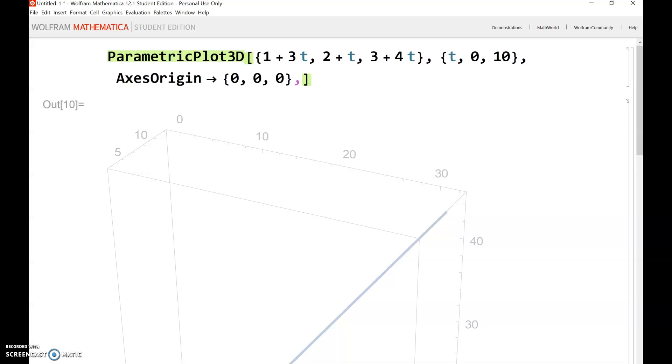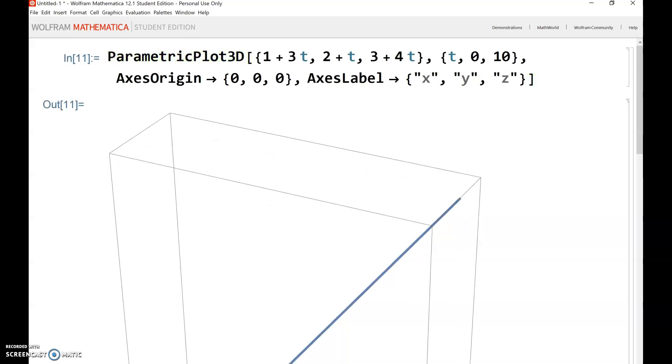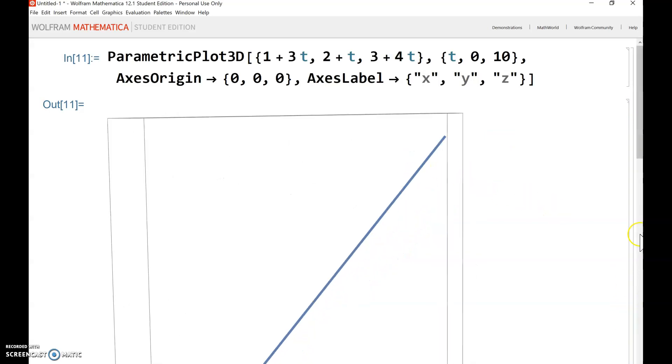And then also, let's label our axes here, so AxesLabel, and then another arrow, and then let's just do x, y, z. So put these in quotation marks, because they're text here. x,y comma z, and that has to go inside curly brackets. Any list of anything always goes in curly brackets. This will help a little bit to better visualize our graph here.